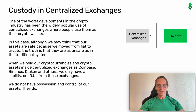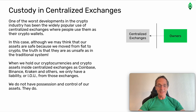Custody in centralized exchanges. One of the worst developments in the crypto industry has been the widely popular use of centralized exchanges where people use them as their crypto wallets. In this case, although we may think that our assets are safe because we moved from fiat to crypto, the truth is that they are as unsafe as in the traditional system. When we hold our cryptocurrencies and cryptoassets inside centralized exchanges such as Coinbase, Binance, Kraken, and others, we only have a liability or IOU from those exchanges. We do not have possession and control over the assets. They do.